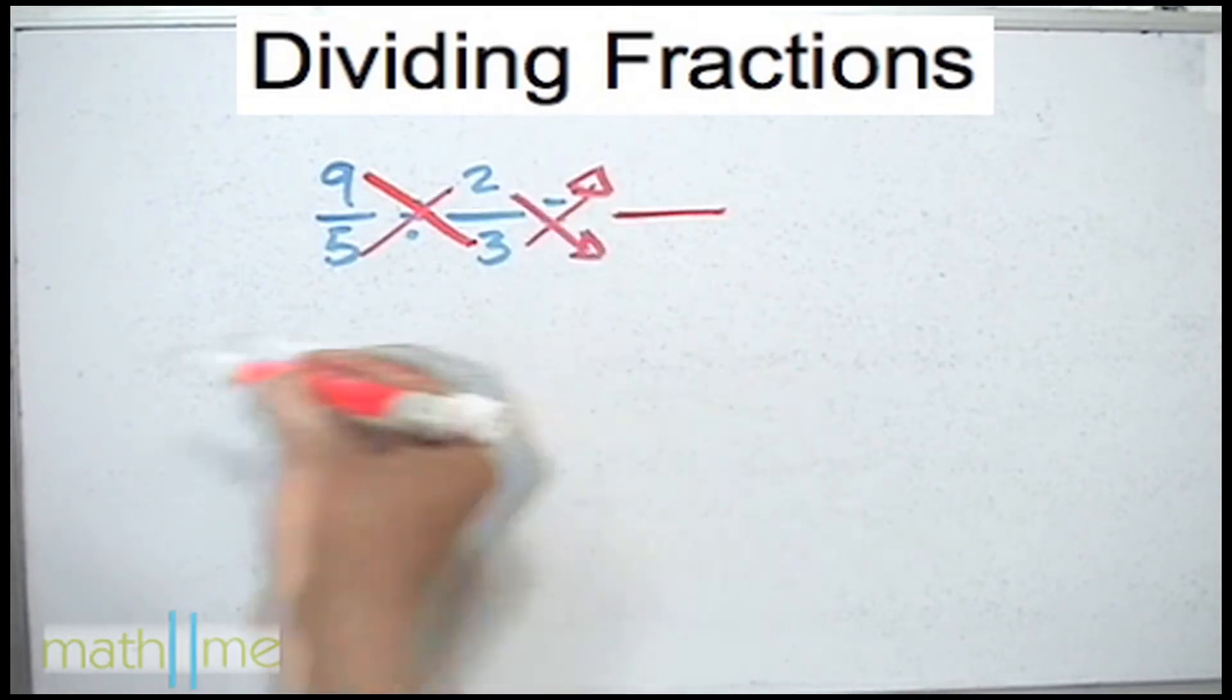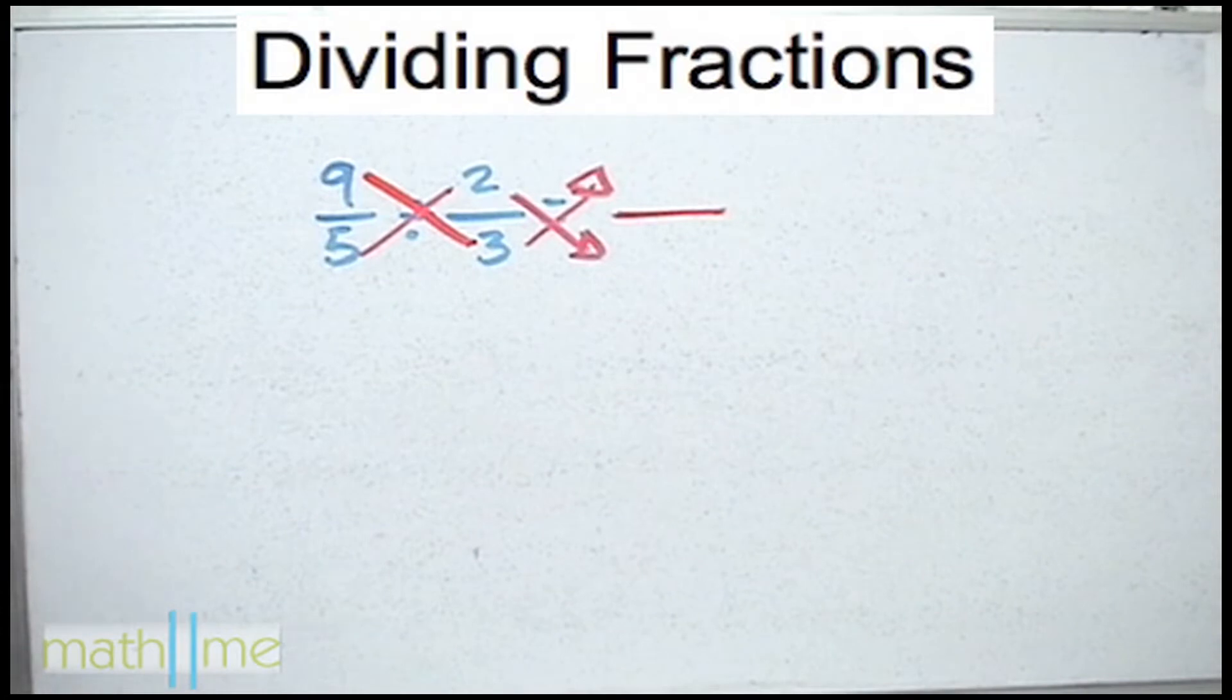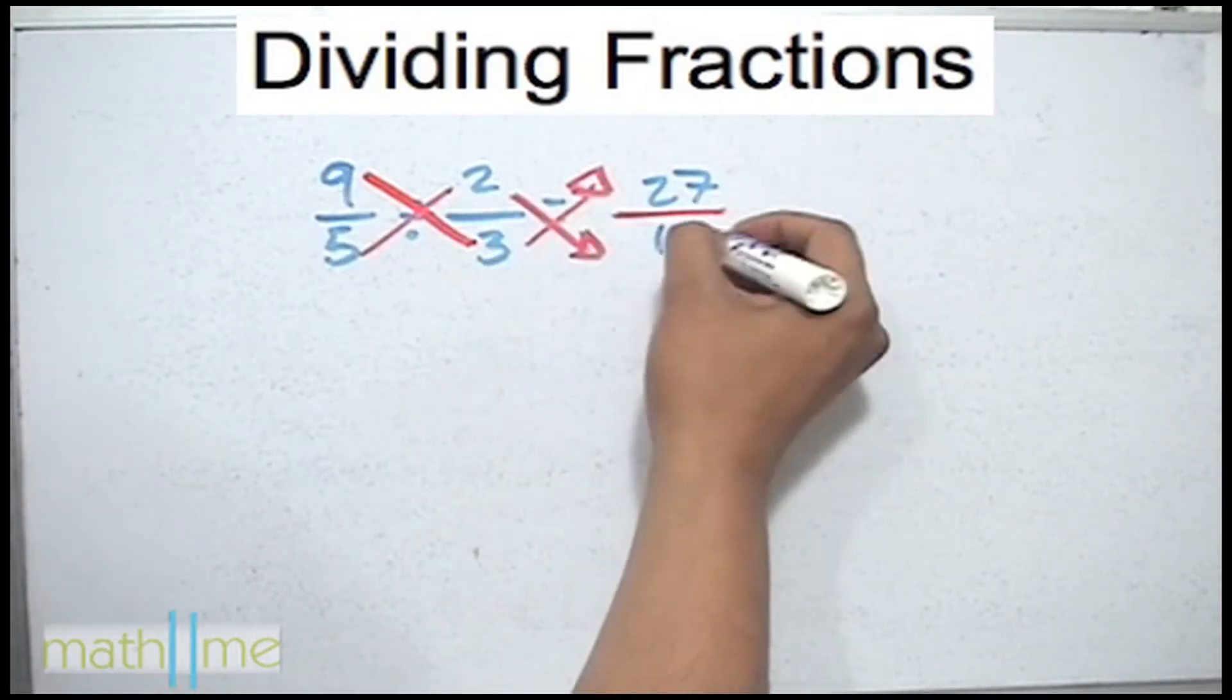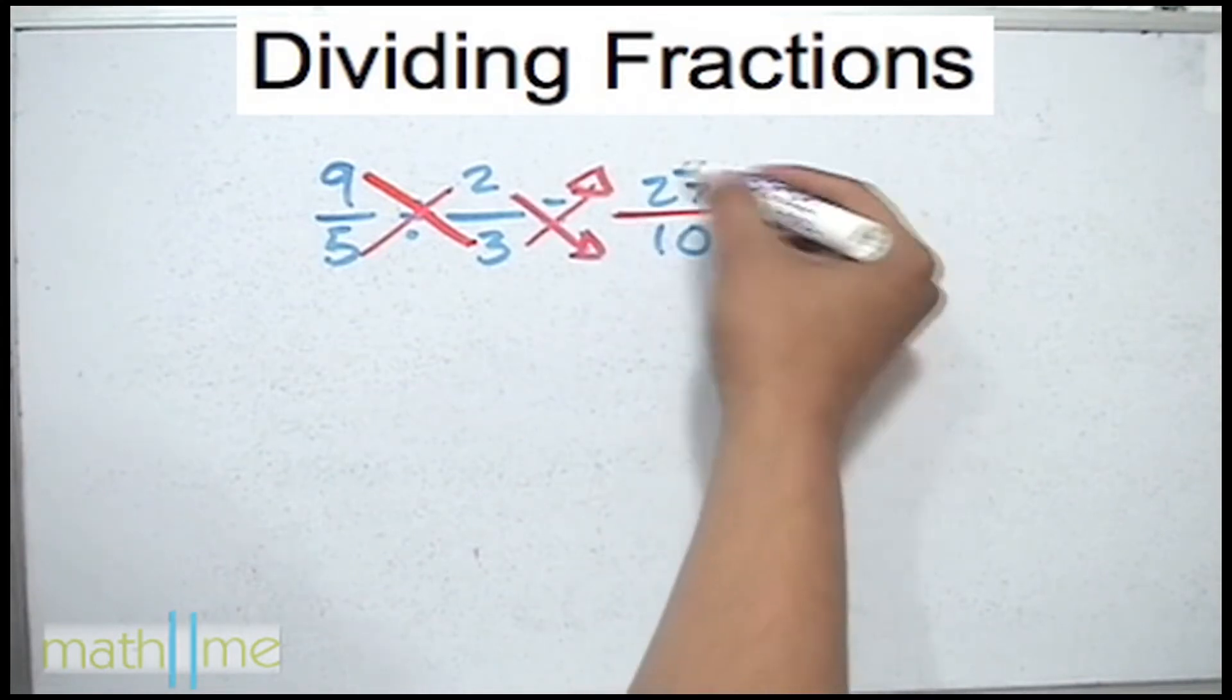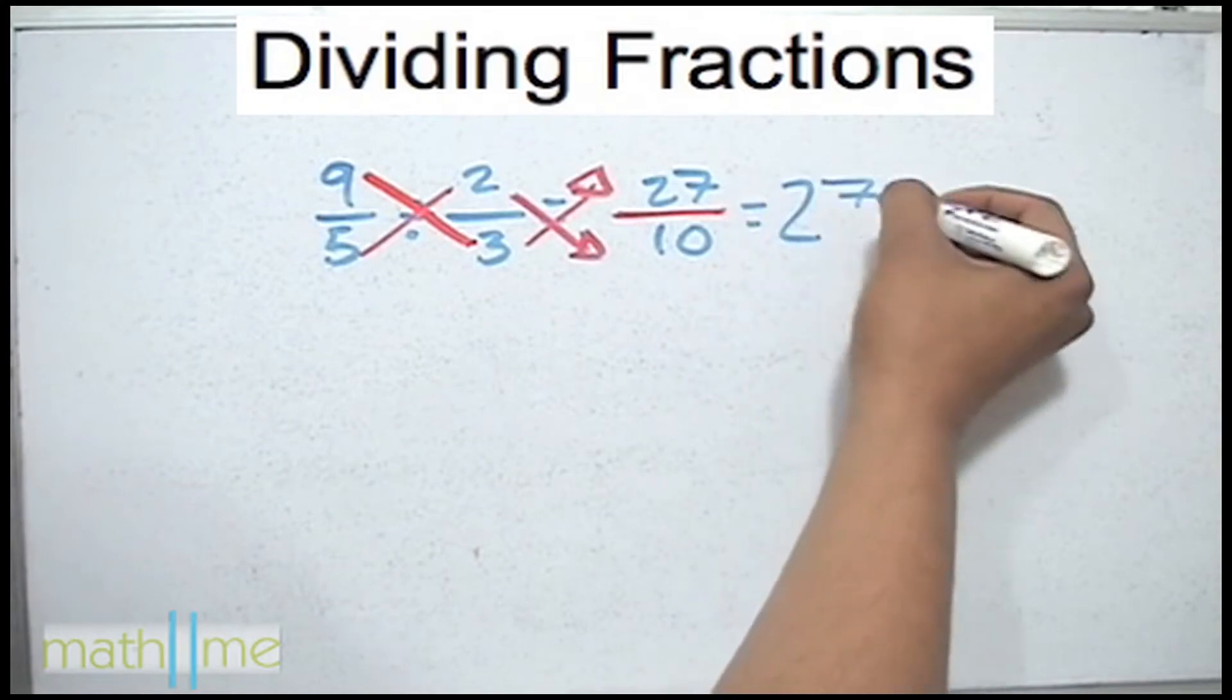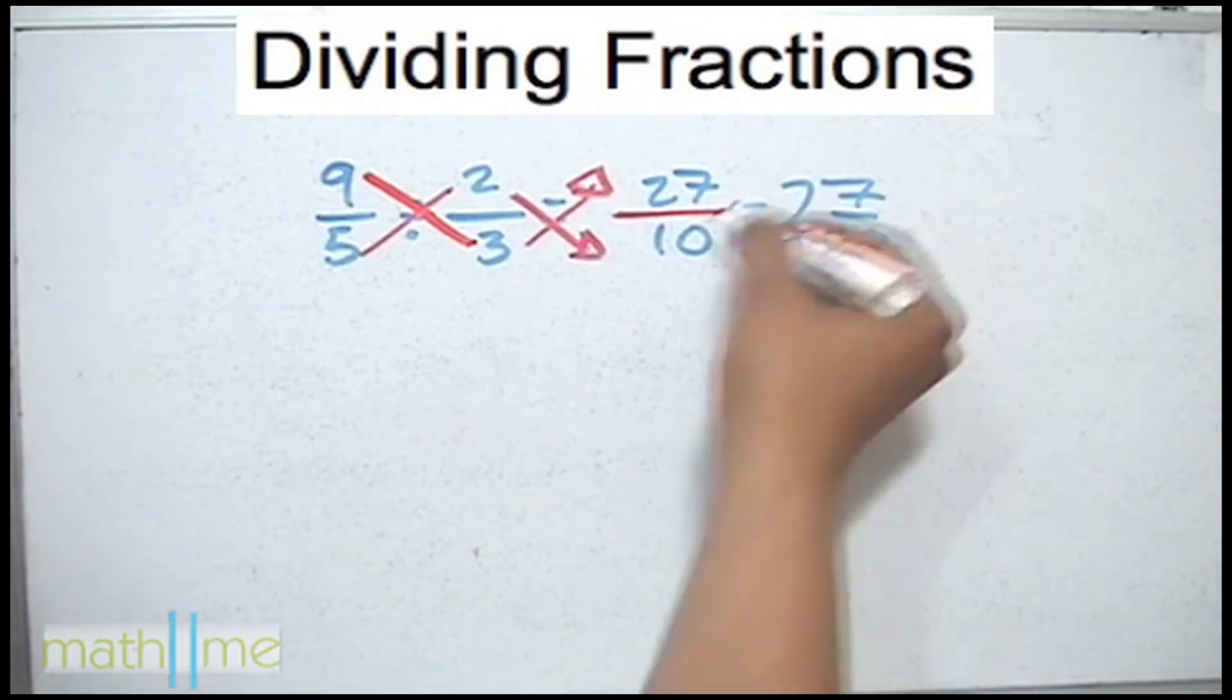But you are going to put the result down here. Multiplying 9 times 3 is 27 and 5 times 2 is 10. This is the answer but if you want a mixed number, 10 goes twice into 27 leaving a remainder of 7, giving 2 wholes and 7 tenths.